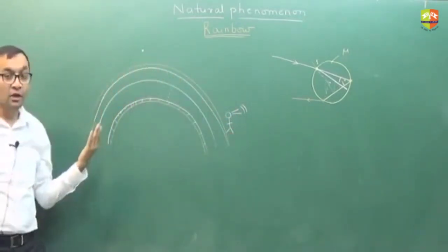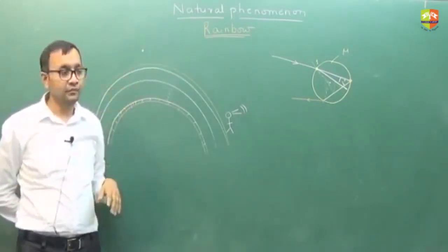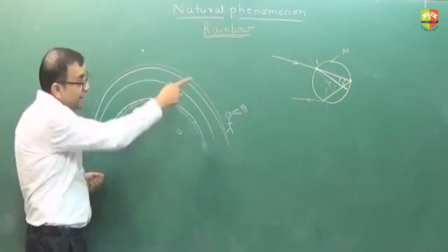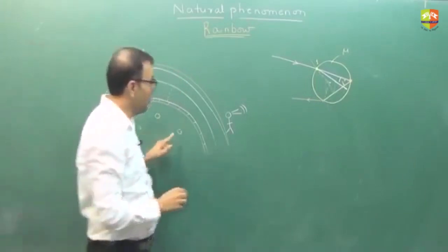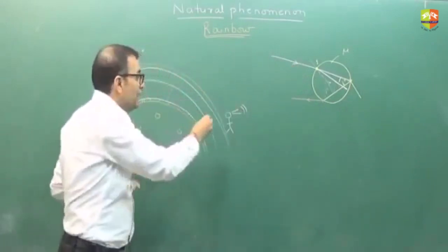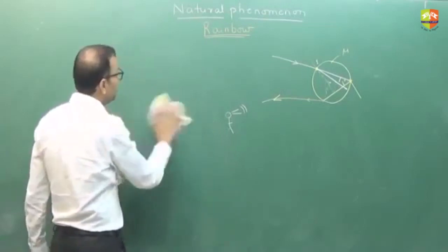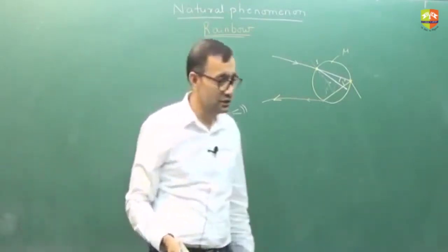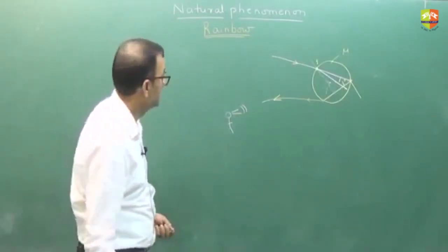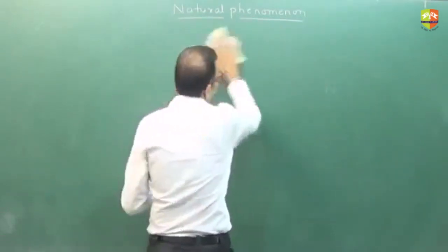You will see an arch, probably because the droplets in that belt satisfy the condition for total internal reflection. For other droplets, light comes out and doesn't come back toward you, so you only see the light coming towards you. Again, this is just qualitative — no numericals on formation. The other natural phenomenon is scattering. Write that down.